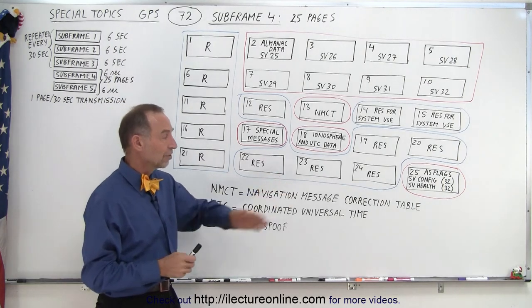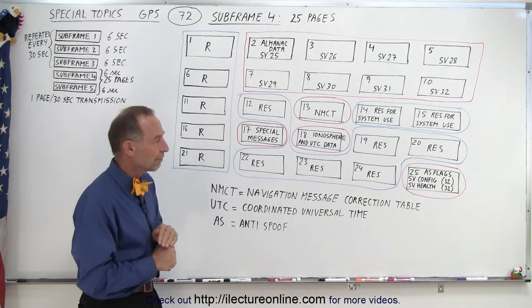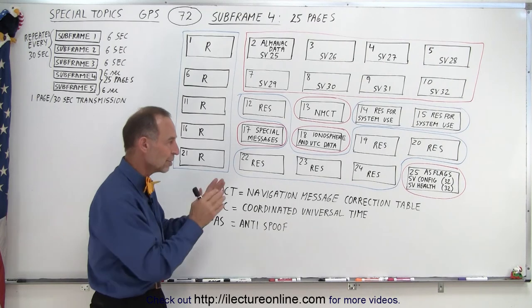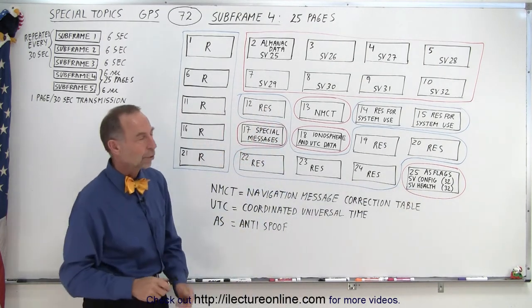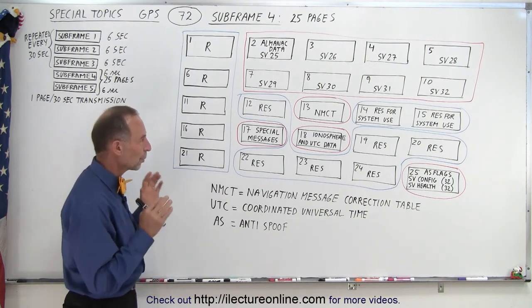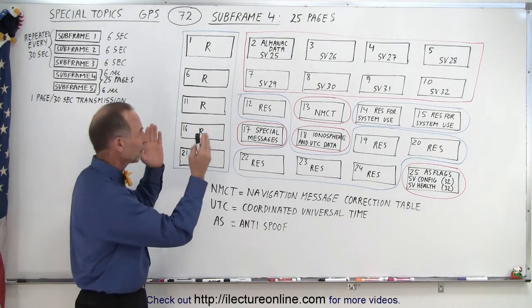So we can then realize that some of the data may not be valid because it's been detected that it's not operating quite at optimum, so we need to ignore that or be very careful about it. In other cases it says everything is working perfectly fine so whatever data you're receiving from that satellite is perfectly fine to be used. So this tells us what the condition is for each of the 32 satellites in the constellation.